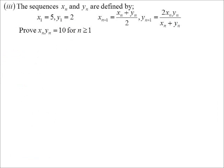Here's a more interesting one. This one actually has two series that are sort of working together. So the first term in the x series is 5, and in the y series it's 2. The formula for the x series is to average the x and the y divided by 2. The formula for the y one is multiply the x and y together, and multiply it by 2, divide by x plus y. We want to prove that every single time we get the equivalent term in each series, multiply them together, we'll always get the answer 10.